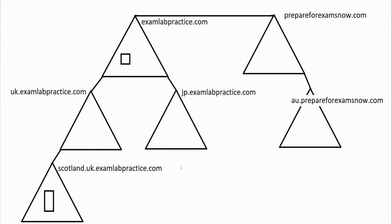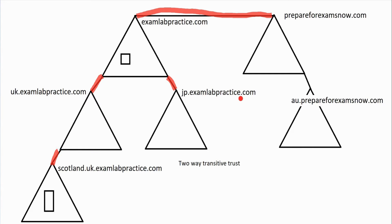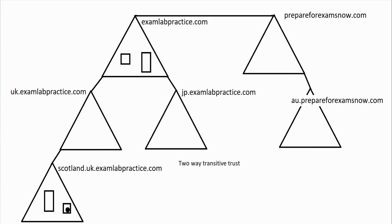There are various types of trust relationships. When you set up a domain as part of a forest, there is an automatic trust relationship that gets built between your domains called a two-way transitive trust. These lines represent that. Two-way means it goes both ways — a server in examlabpractice.com and a client in Scotland, or vice versa. The Scotland client could get to the server in examlabpractice.com, and down to the server in Scotland, if these trust relationships are set up.